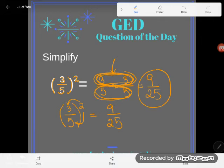All right, so what is three-fifths squared? It's just nine twenty-fifths. If you have any questions about this or any other GED math topic, be sure to drop it in the comments and I'll do my best to answer it.